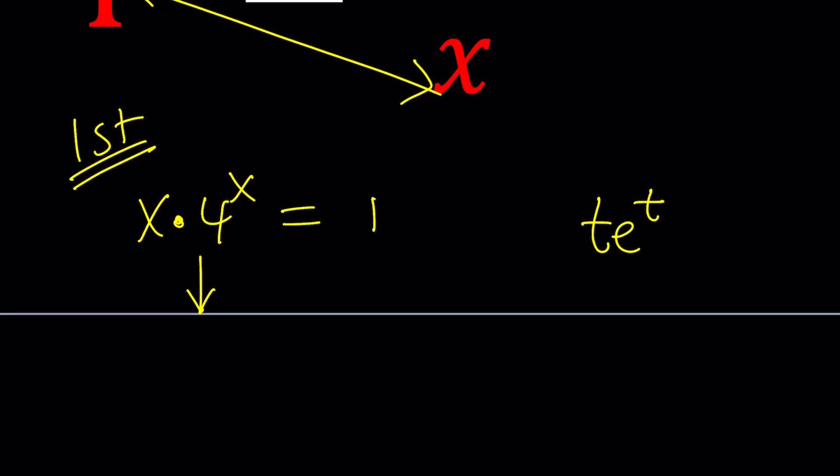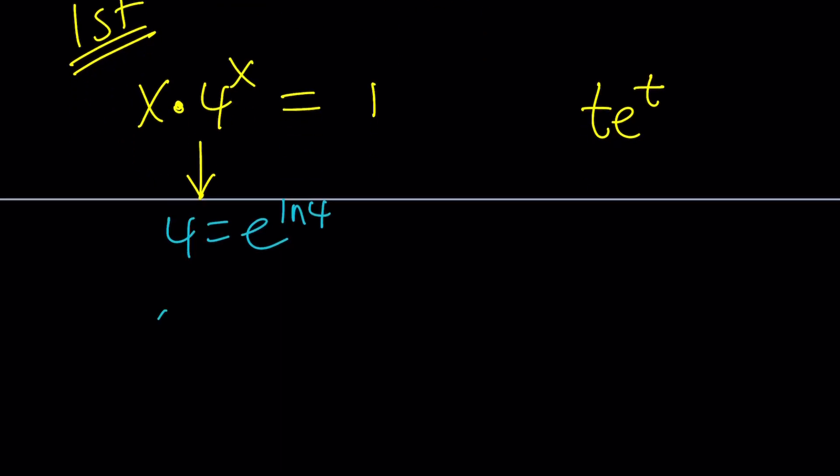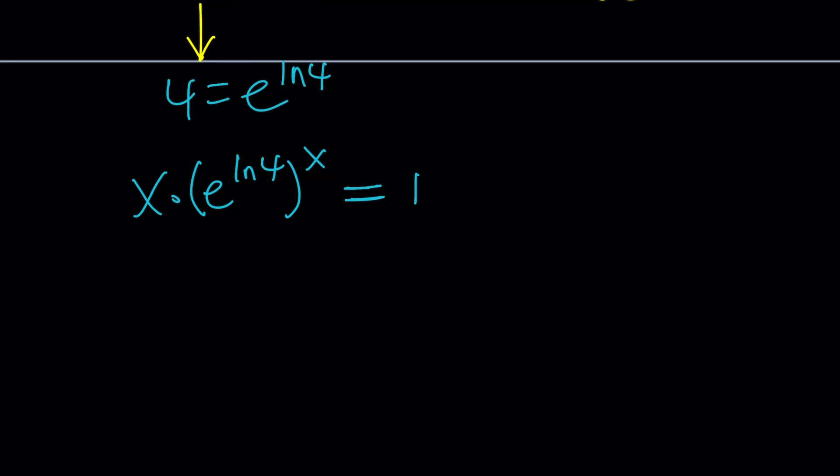So the first thing I want to do is I want to change 4 to Euler's number e, because I'm going to work with exponentials here. So I can write 4 as e to the power ln 4, right? And let's go ahead and replace it with that, e to the power ln 4. And then I have to raise it to the power x, and this equals 1. Notice that I haven't changed anything. I just rewrote it. And now we're going to multiply these exponents. So that's going to give us x times e to the power x ln 4. I'd rather write the x first, equals 1.